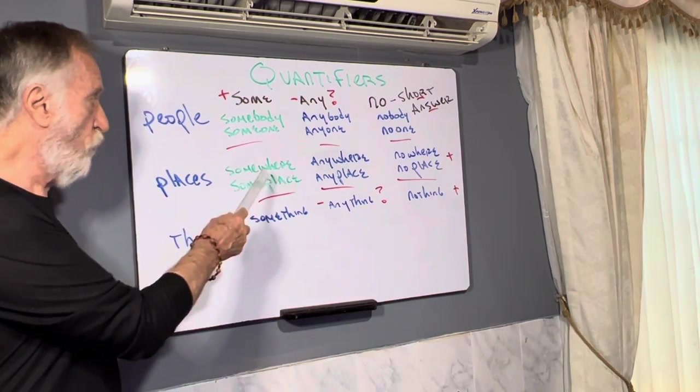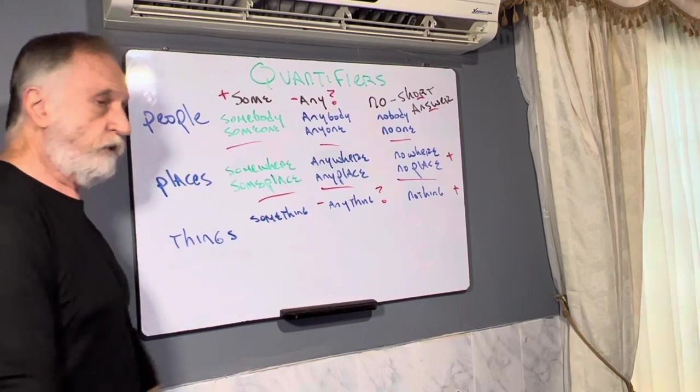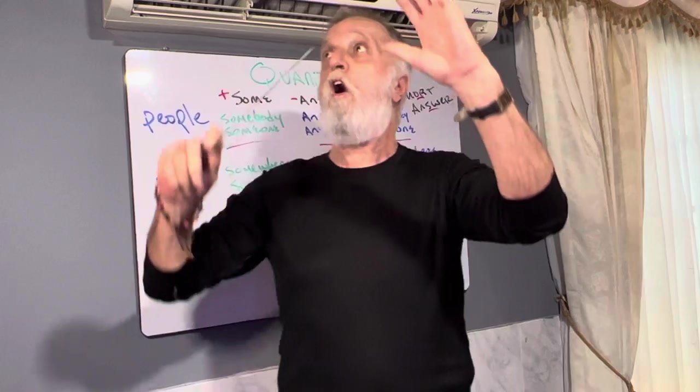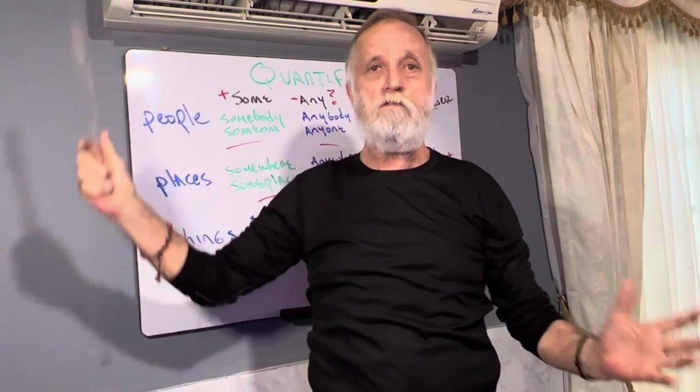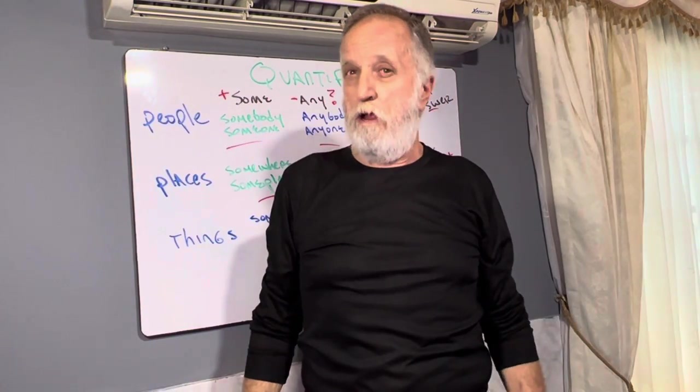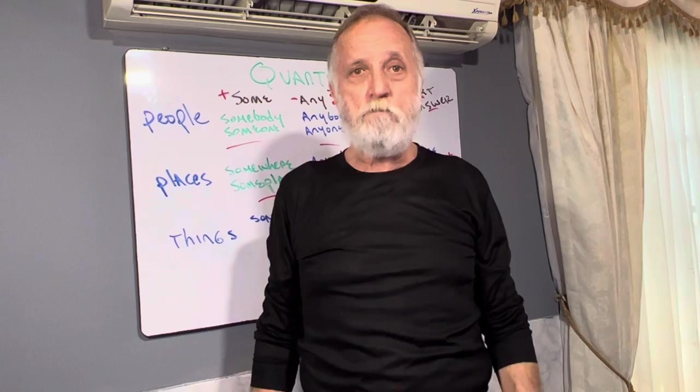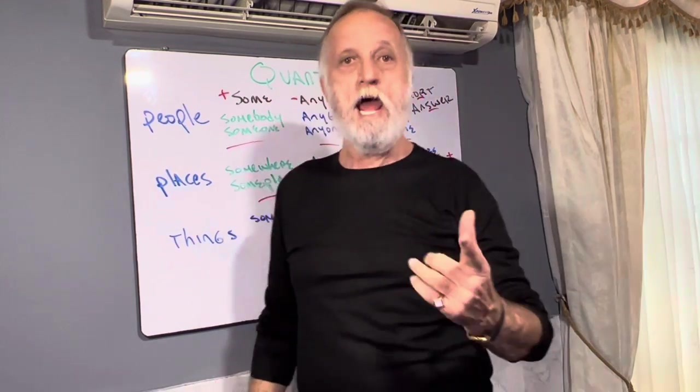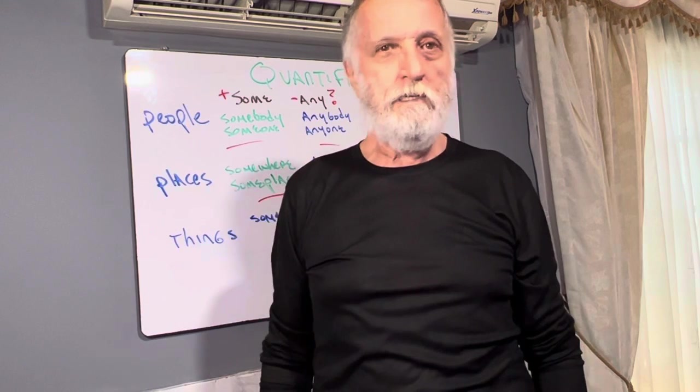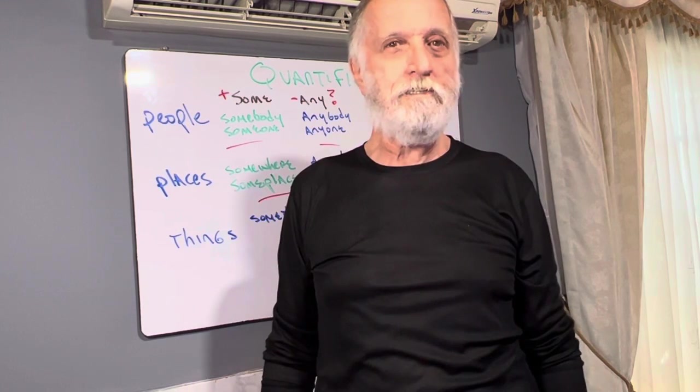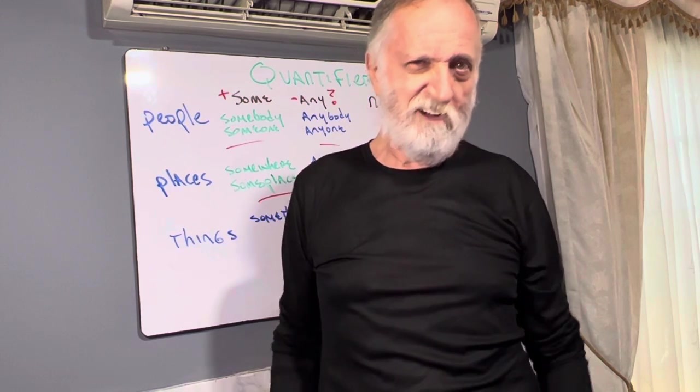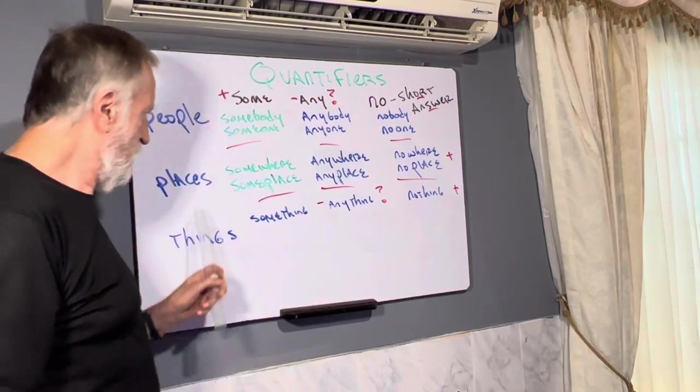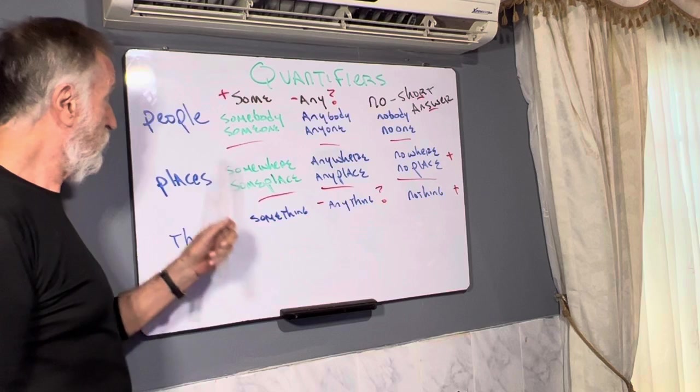Places, somewhere, someplace, somewhere, over the rainbow. There's a place for you and me. Oh, no. I tried to be a singer. Quantifiers. Places, people.